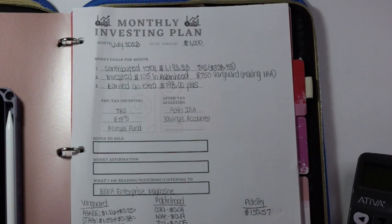$750 of that was to my Vanguard account. I am trying to switch gears and max out my Roth IRA, so that is why I did not invest as much into my Robinhood account. The teacher retirement system automatically comes out. That was $328.33. I invested $105 in Robinhood.